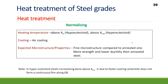Normalizing is done above A3 for hypoeutectoid steel and above Acm for hypereutectoid steel. Cooling is always by air cooling. The expected microstructure is finer compared to the annealed one, with more strength and lower ductility than annealed steel. Importantly, normalizing for hypereutectoid steel is done above Acm — unlike annealing — because the faster cooling rate prevents cementite from forming a continuous film along the grain boundaries.